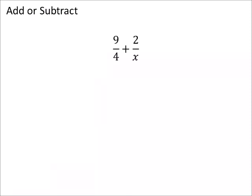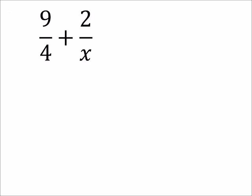It seems like we did a problem like this earlier today. We've done one like this where we've got an unknown or a variable in the denominator. So when we want common denominators, we may have to include that x. I'm going to say that the common denominator is 4x, so I'm going to need to multiply this first term by x — both the numerator and denominator — giving us 9x over 4x.